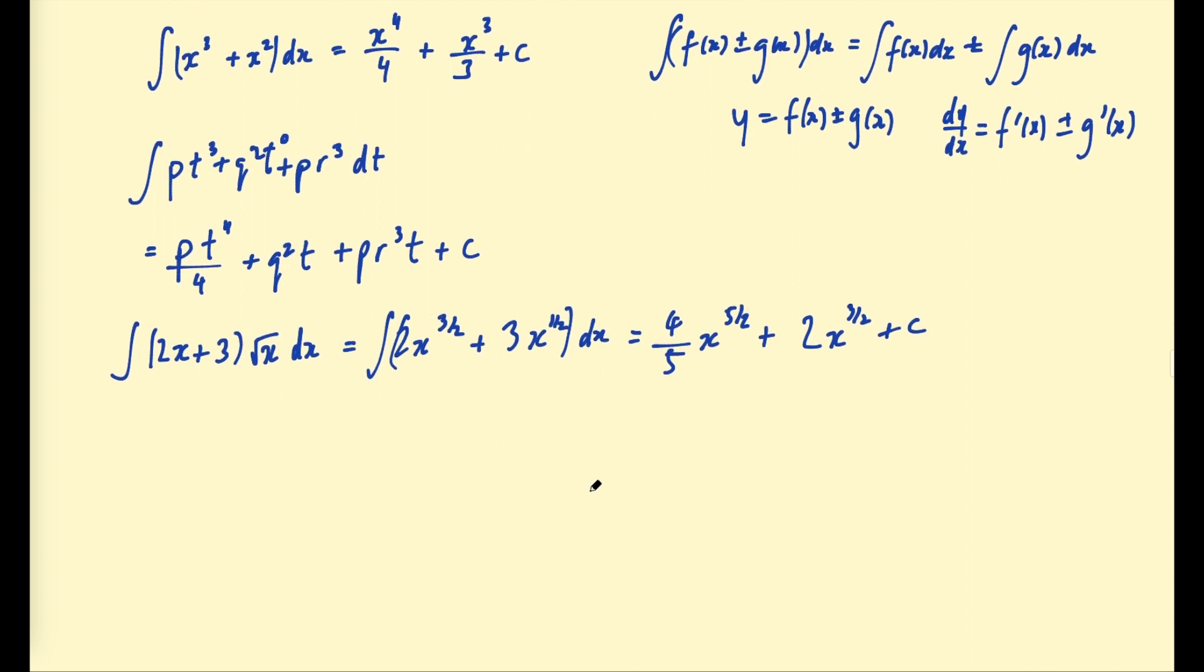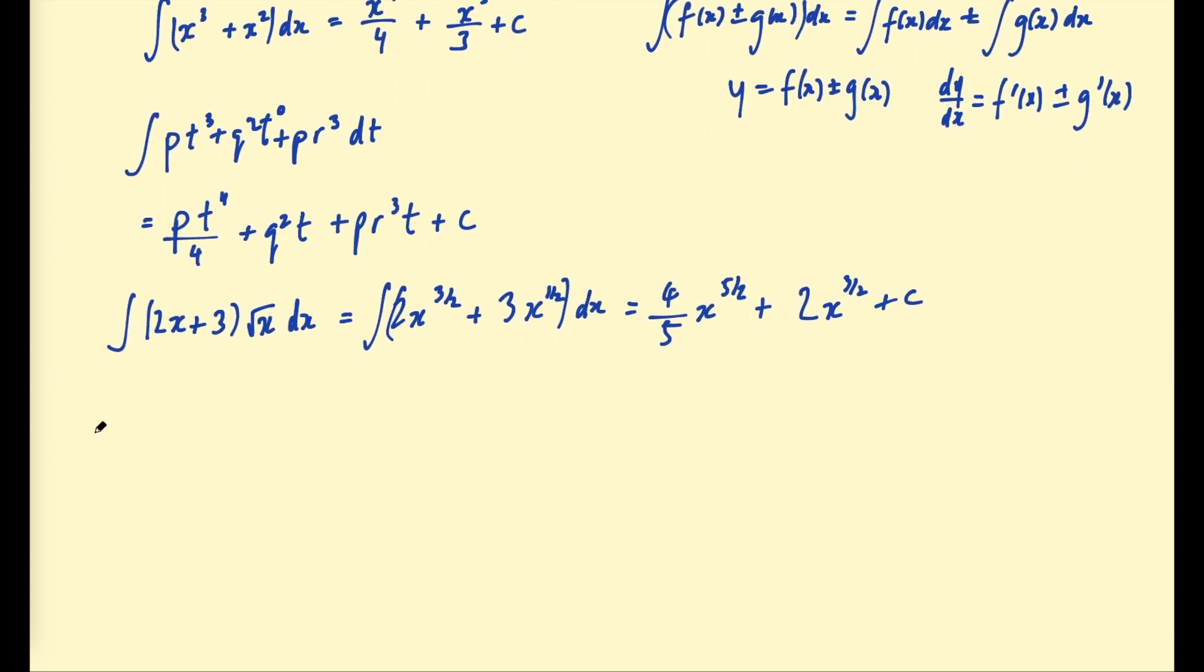Let's do one more example. Let's say you have the indefinite integral of (2x plus 1) all squared divided by the square root of x with respect to x. Here you want to expand the brackets and then separate the terms individually. So here let's firstly expand the brackets. This will be 4x squared plus 4x plus 1 over the square root of x, which I'm going to write as x to the power of 1/2.